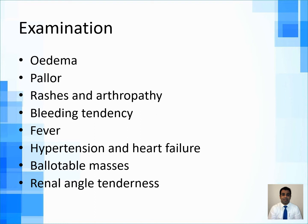In summary on examination: edema indicates nephritis; pallor indicates significant renal involvement; rashes and arthropathy suggest a connective tissue disorder like lupus or Henoch-Schönlein purpura; fever and renal angle tenderness indicate urinary tract infection; palpable masses suggest hydronephrosis, obstruction, or Wilms tumor; and hypertension and heart failure point to acute glomerulonephritis.